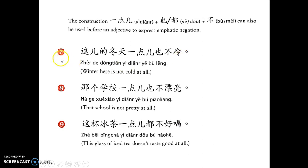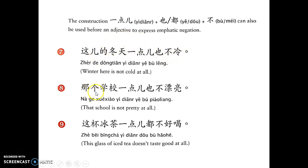The construction 冬天一点也不冷 — here 冷 is an adjective meaning 'cold'. We can use this pattern to describe the subject. So 这儿的冬天一点也不冷. Also, 那个学校一点也不漂亮 — so that school is not even a little bit pretty, not pretty at all.